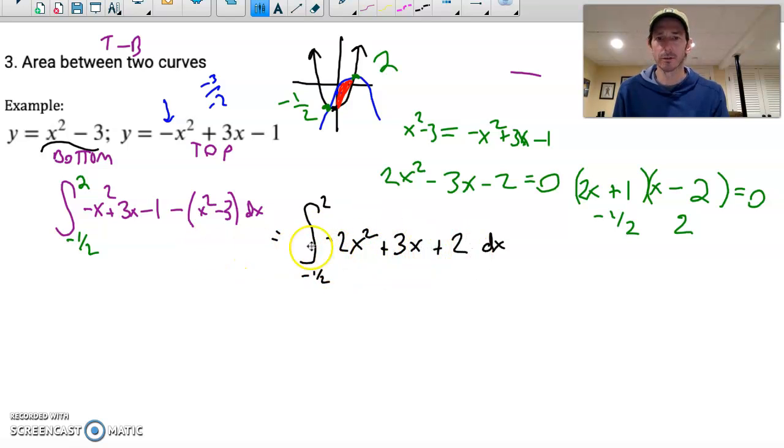Again, no trick to that, no u substitution, just straightforward integration. So if I integrate the first piece, I'm going to have negative 2x cubed over 3 plus 3x squared over 2 plus 2x. And again, I had to evaluate that between 2 and negative 1 half.